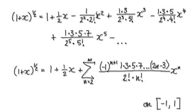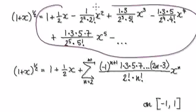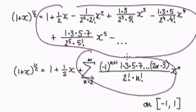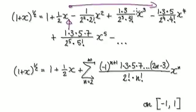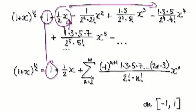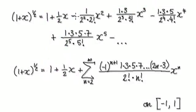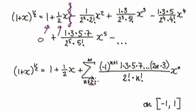Now tidy this up. We want to write everything here in summation form. But the thing is, our pattern starts from here — from this term onwards. So we are going to maintain these first two terms, and because our pattern starts from here, we are going to start the summation at n equals two.